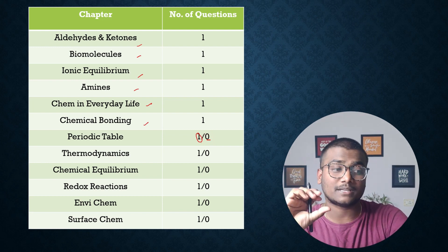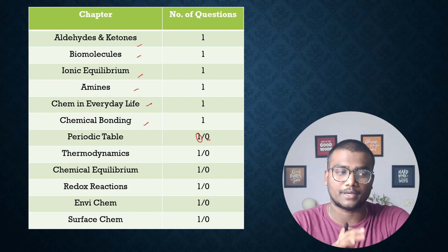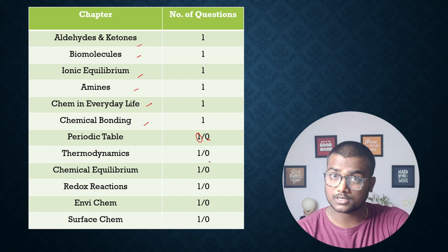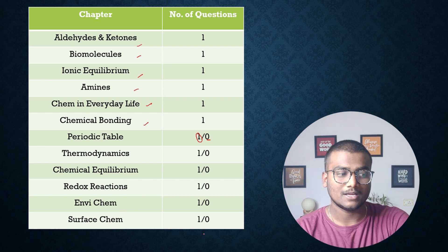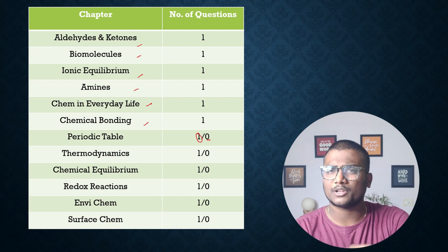Thermodynamics, one or zero. Chemical equilibrium, redox reactions, environmental chemistry, surface chemistry, one or zero. Surface chemistry, environmental chemistry, biomolecules, these are simple topics you can easily cover them.